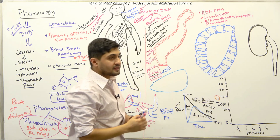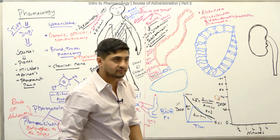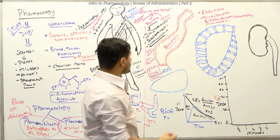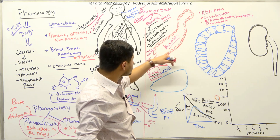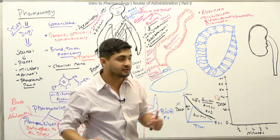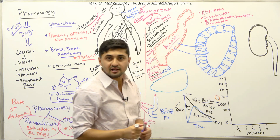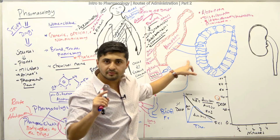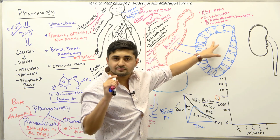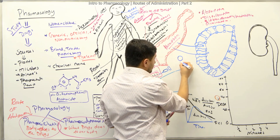Absorption takes place in the vascular compartment. Once the drug is absorbed into the plasma and bloodstream, it gets redistributed to other organs and tissues. The drug moves from the blood vessel through the interstitial space and into the cell. However, to pass into cells, drugs must cross the plasma membrane.